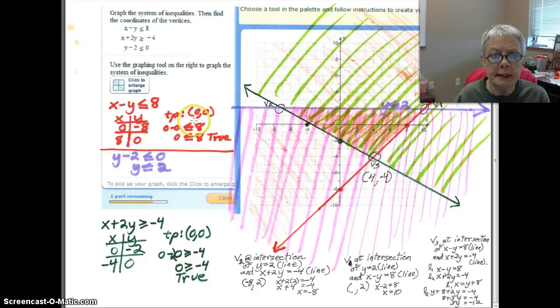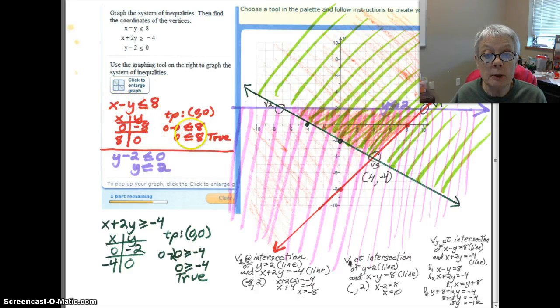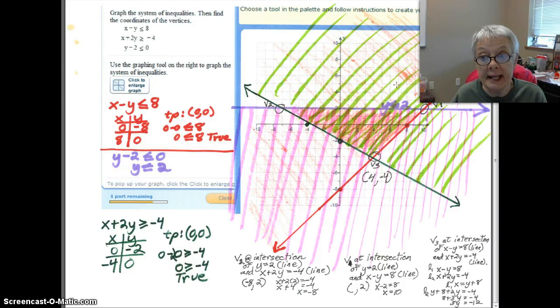I use 0, 0 as my test point. 0 goes in for X, 0 goes in for Y. I have 0 is less than or equal to 8 and so this is true. I mean, 0 is less than 8, so I shaded in the 0, 0 direction on the 0, 0 side of the red line. And I shaded with red.